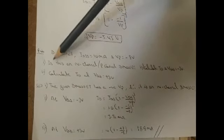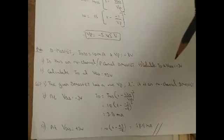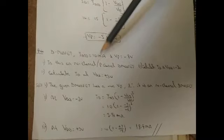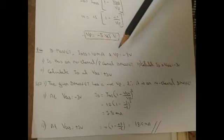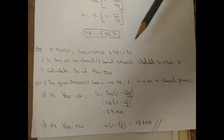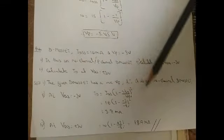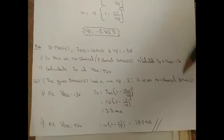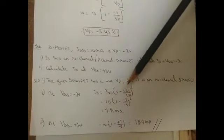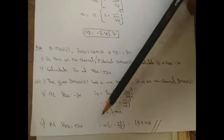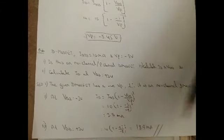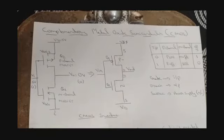Problem: For a D-MOSFET, ID = 10 mA at VGS = −1 V. Determine VP given IDSS = 15 mA. Using ID = IDSS × (1 − VGS/VP)²: substituting values gives VP = −4.45 V. Next problem: IDSS = 10 mA, VP = −8 V. First determine if it is N-channel or P-channel. Since VP is negative, it is an N-channel D-MOSFET. At VGS = −3 V, ID = 3.91 mA; at VGS = +3 V, ID = 18.9 mA.